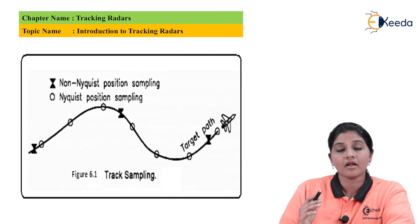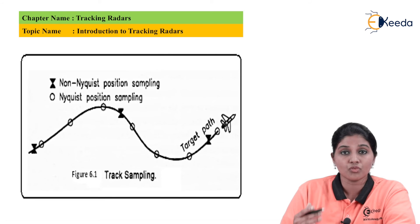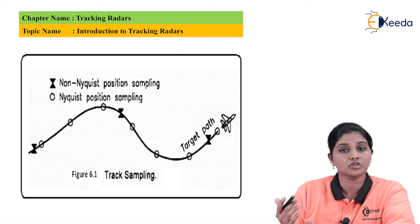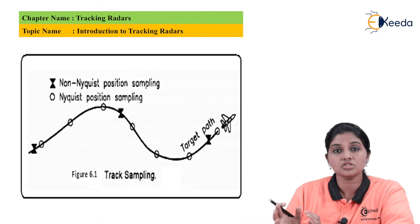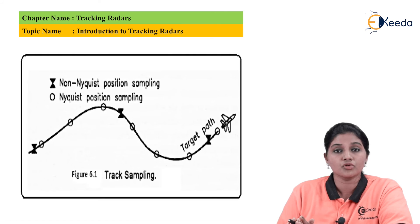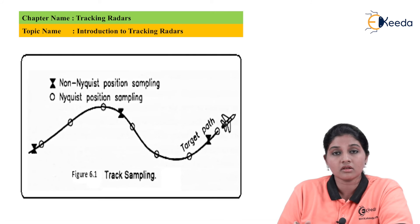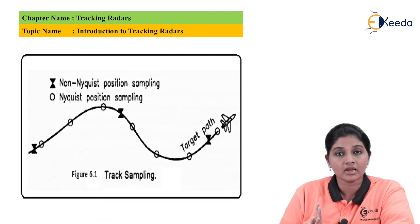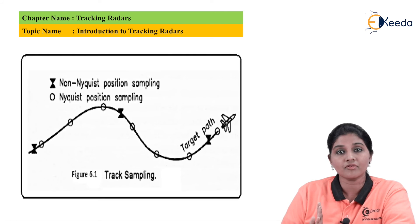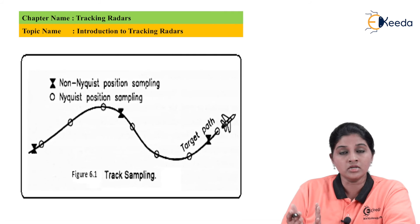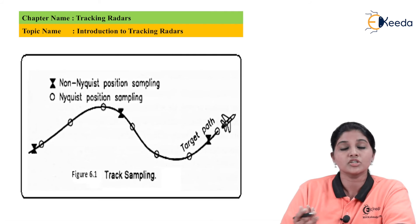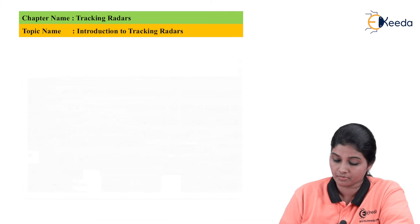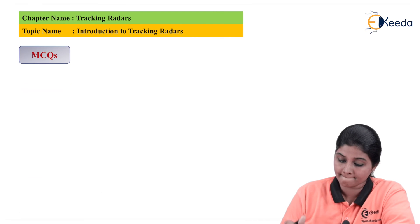In this way the tracking radar operates. The tracking radar provides information and tracks one or more than one target irrespective of what other content is present in the space. In case of tracking radar, we first require to find the target, and then after finding it the radar enters into the tracking mode.